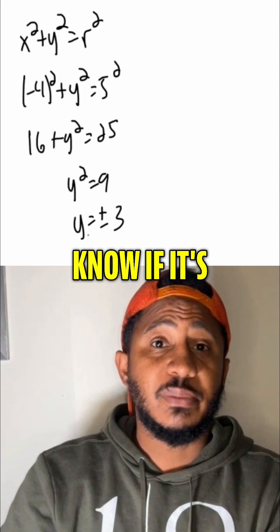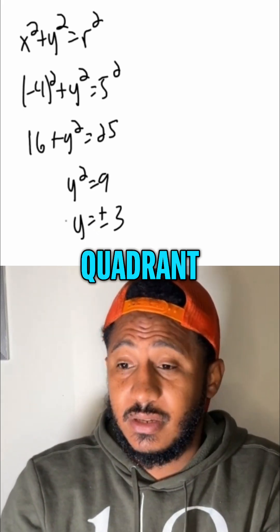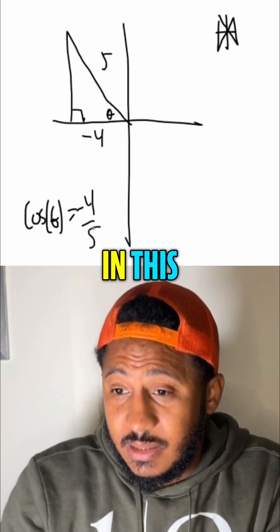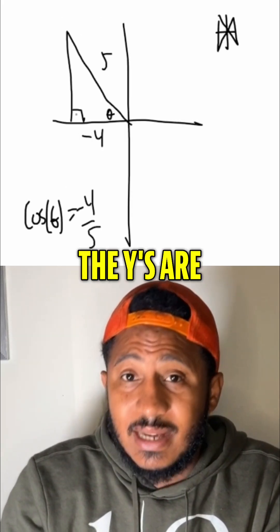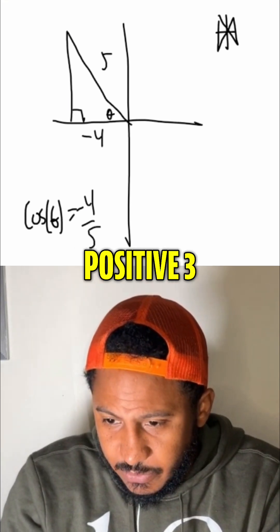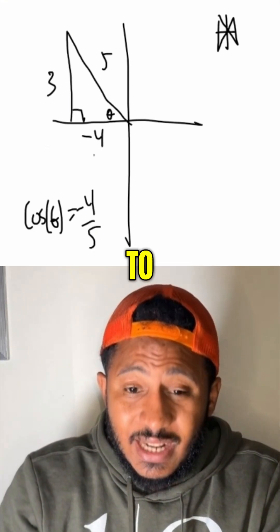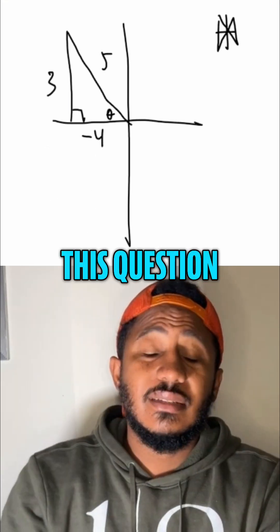So how do we know if it's plus or minus? Well, that's why we drew the triangle in the correct quadrant. Here in this quadrant, the y's are positive. So we know it's positive 3. Now let's try to answer that question.